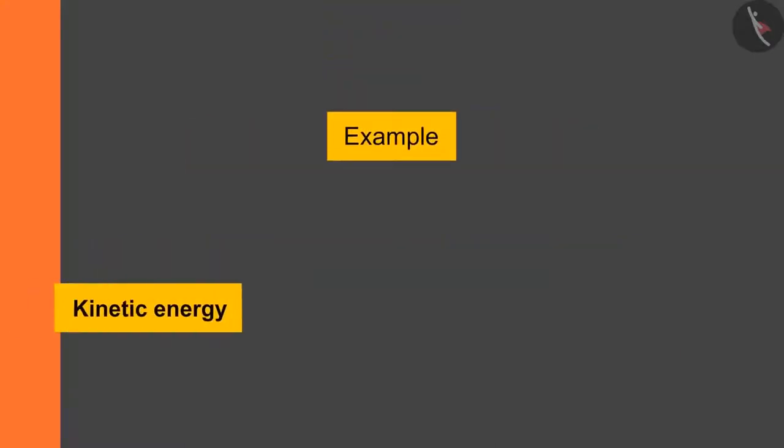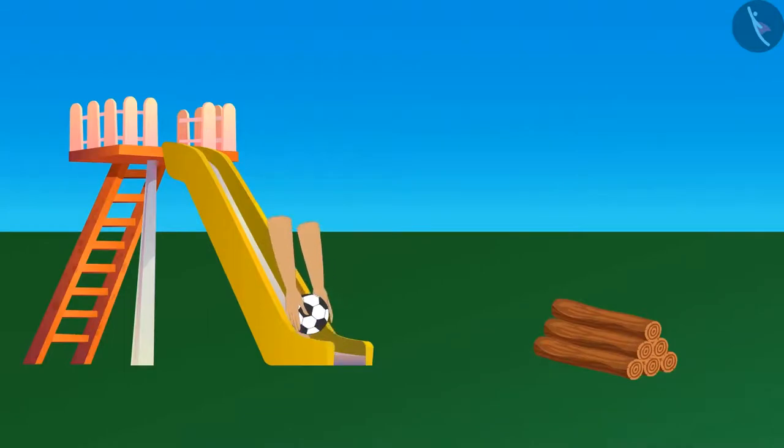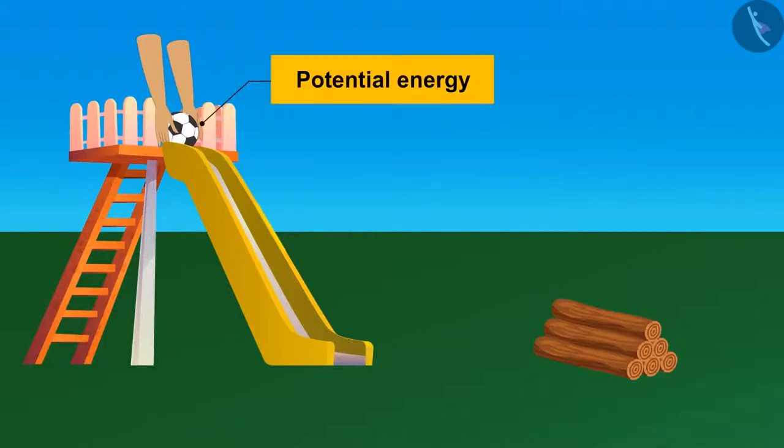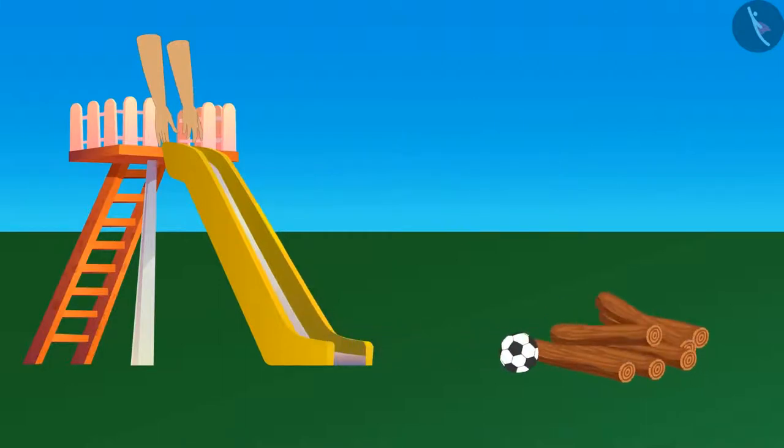Let's take an example of potential and kinetic energy. It took some work to put this ball on the top of the slide. Due to this work done, a difference in height gives this ball some potential energy. If we push this ball a bit, then the potential energy gets converted into kinetic energy. If this ball collides with a bunch of sticks and the sticks fall apart, here the kinetic energy of the ball did some work on the sticks to fall them apart.